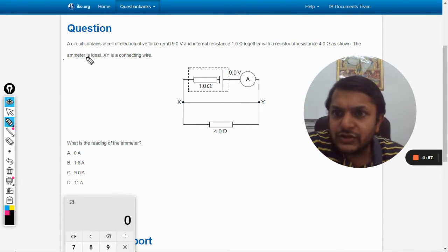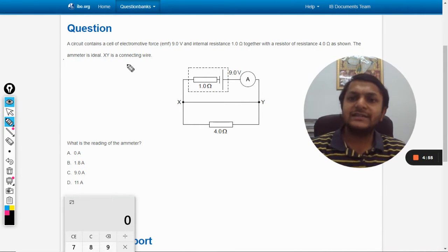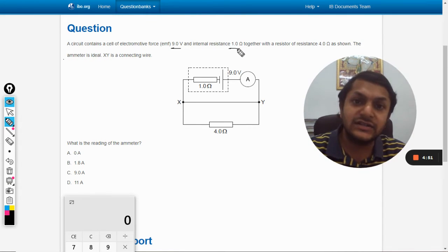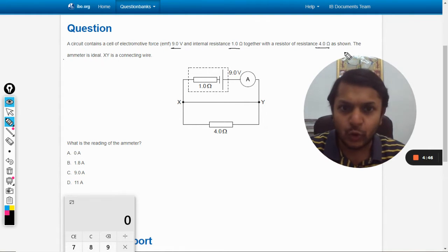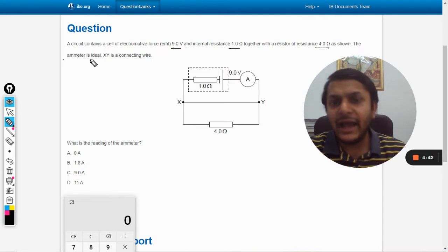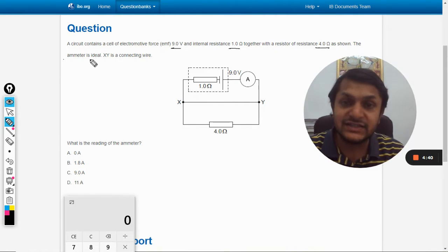Okay, so in this question a circuit contains a cell of electromotive force 9 volt and internal resistance 1 ohm, together with a resistor of resistance 4 ohm as shown. The ammeter is ideal. Ideal ammeter means the resistance posed by the ammeter will be equal to zero.